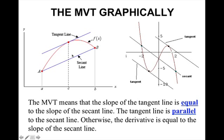Here's one graphical example, and here's one where it has multiple tangent lines. There's the secant through the endpoints, and then there are two tangent lines within that same interval that have the same slope as the slope of the secant line, or are parallel to the secant line.